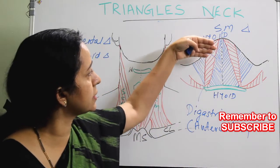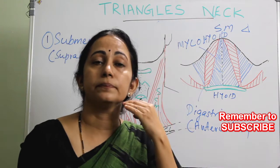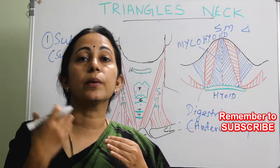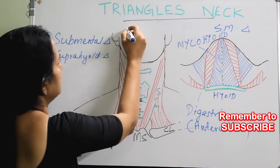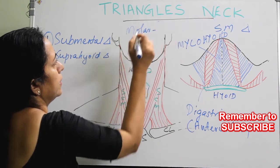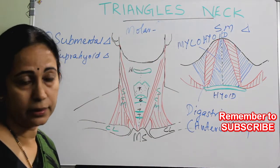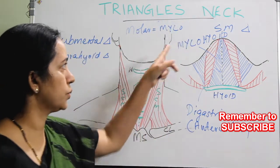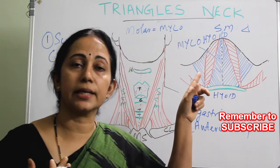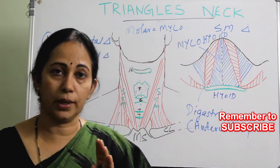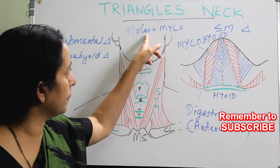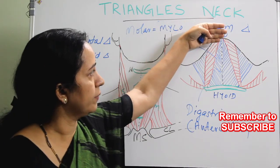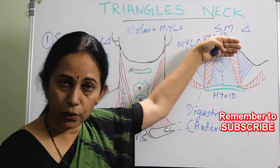The mylohyoid muscle originates from the mandible near the lower molars. In Greek terminology, 'mylo' means molar. Since this muscle attaches in front of the lower molars, it has the prefix 'mylo.' The muscle originates from the mylohyoid line of the mandible, just in front of the lower molars.